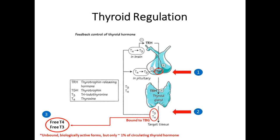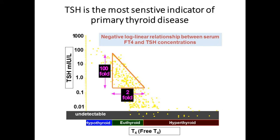All of us are using TSH as a screen for primary thyroid dysfunction, and we should — it is absolutely the most sensitive indicator of primary thyroid disease. There's a so-called negative log-linear relationship between T4 and TSH. When T4 shifts a little bit lower or higher, even within the normal reference range, the pituitary notices and very quickly shifts the TSH in the opposite direction — up to 50-fold more than that T4 shift. That's why it's such a sensitive indicator of thyroid disease, even before actual thyroid levels are out of the normal range.